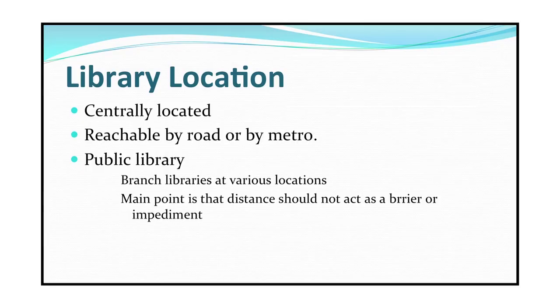Implications of the first law: Library location. It means that the library should be centrally located. For example, if it is a university library, then it should be centrally located and accessible. Users should be able to reach the library without any loss of time. If it is a public library, it should be well connected by road or by metro rail, and it should also have branch libraries in different parts of the city so that citizens can easily walk in without wasting any time. Distance or commute should not serve as an impediment in visiting the library and using its resources.